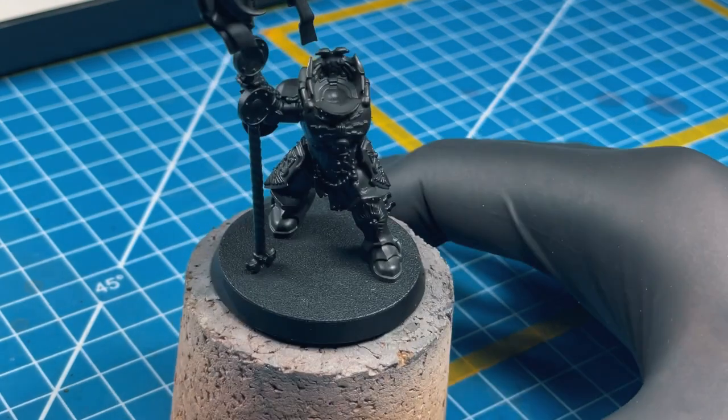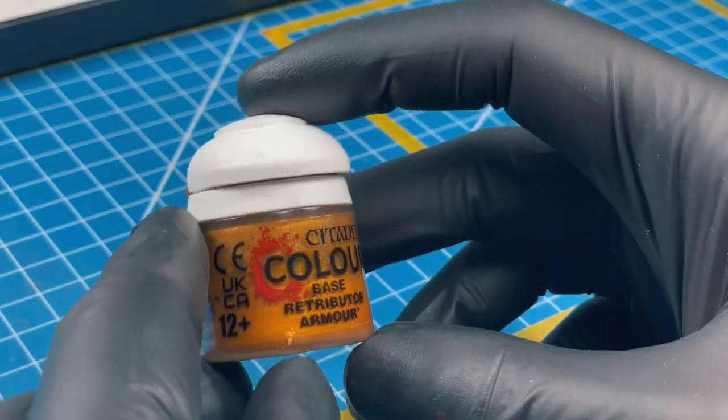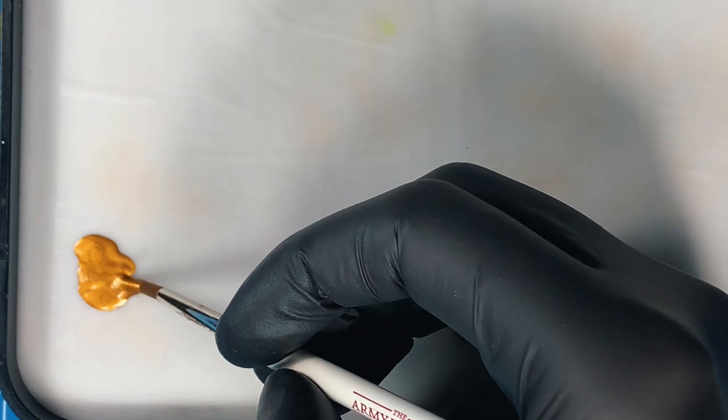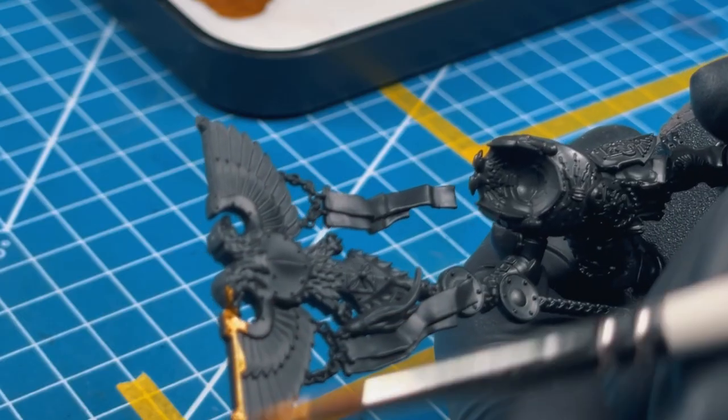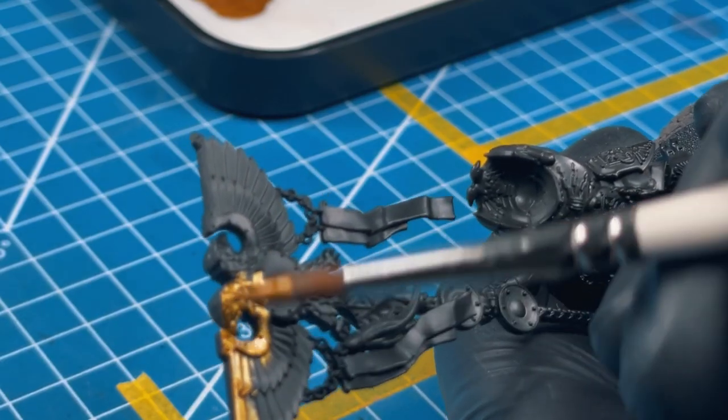Start as always from black primer, and now grab the Retributor Gold and paint the whole miniature. Probably two coats will be enough, just paint it all gold.